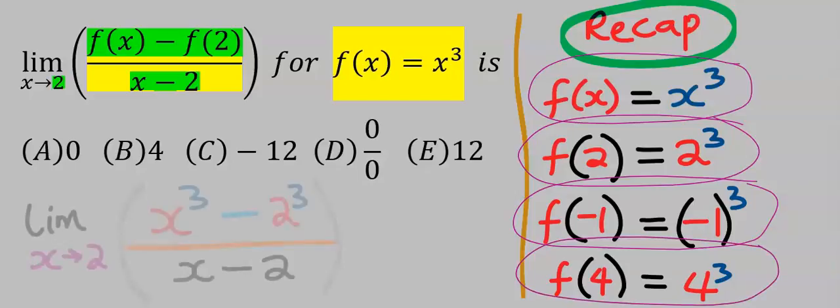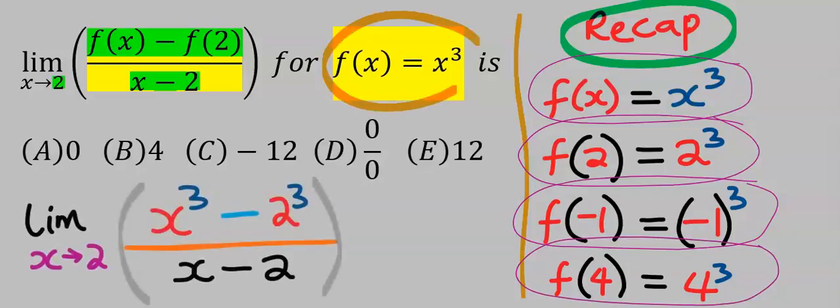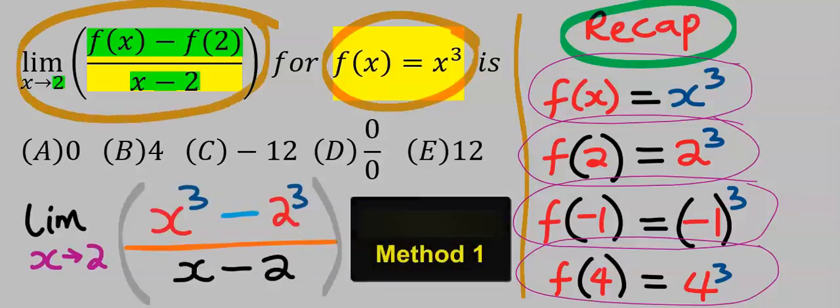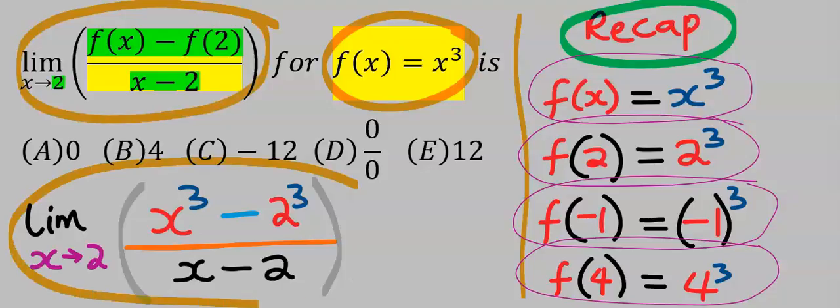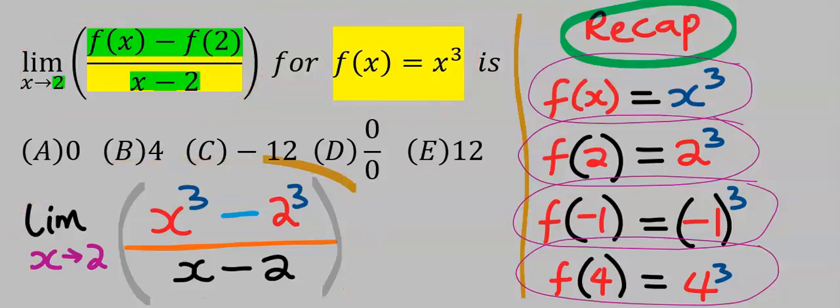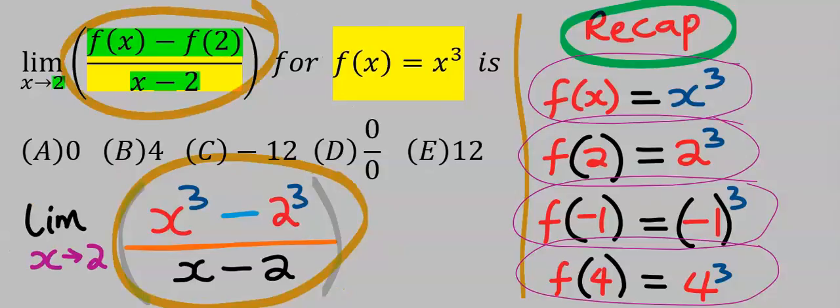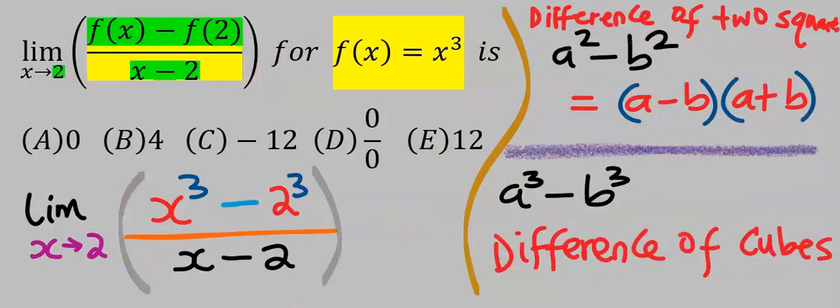Next, because of this given condition, this function and limits will become this. Hence we are going to solve this. a squared minus b squared is difference of two squares, however a cube minus b cube is difference of cubes.